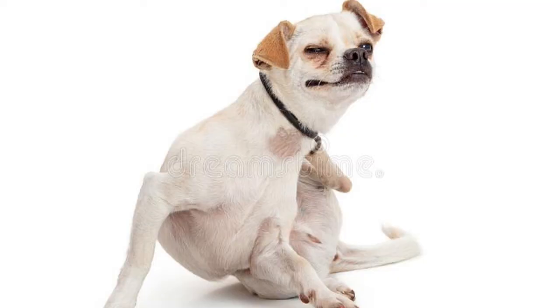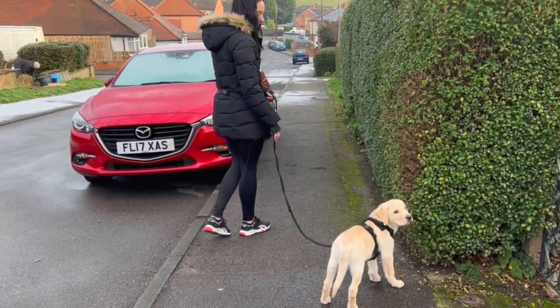So for example, maybe your puppy is approaching another dog or a person from a distance, and all of a sudden your puppy has a sudden urge to scratch themselves, or they start sniffing the floor and wandering off in another direction and completely ignoring you. What your puppy is doing in this situation is likely assessing the situation before they decide what they're going to do next. So do they want to approach or would they prefer to go the other way? And that's what I call a displacement behavior.